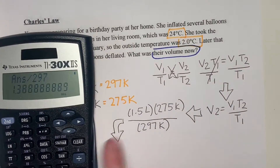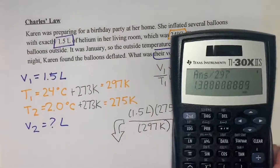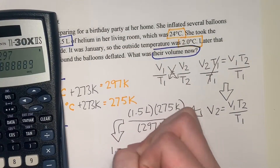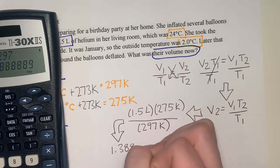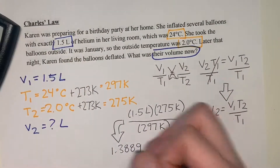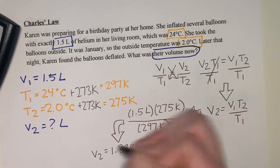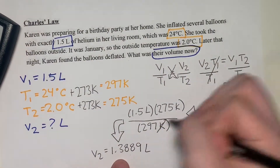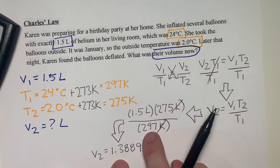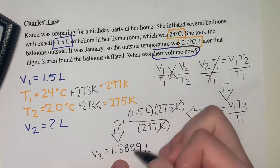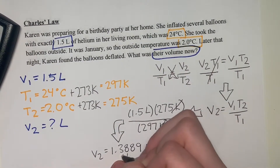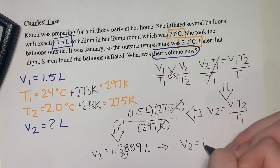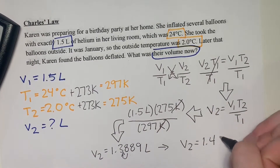Once you have this, plug it into your calculator. You're going to get a long decimal — 1.388, etc. But we need to remember sig figs. We're going to look at the smallest amount, which is 2, round up, and our final answer is 1.4 liters.